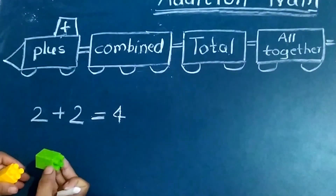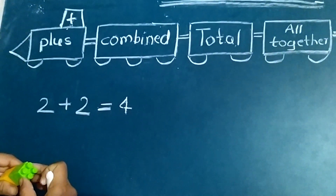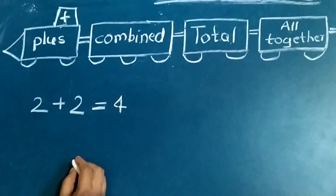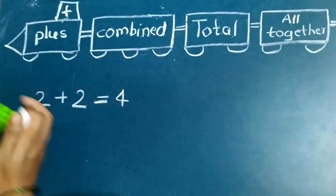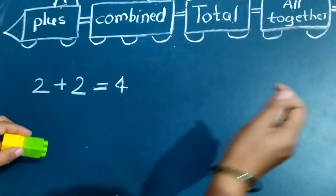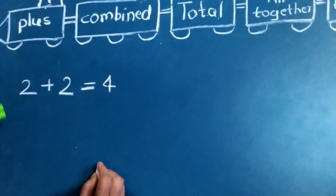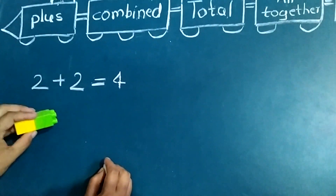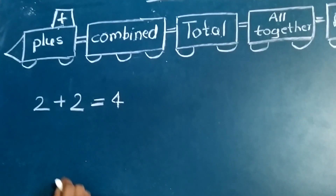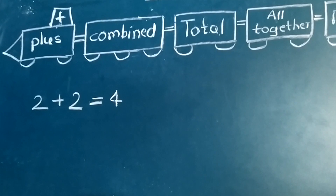Two yellow blocks combine with two green blocks. Swara gave me two more blocks in this example. Two plus two is equal to four.